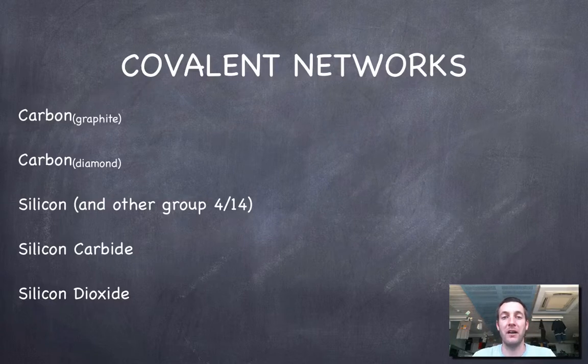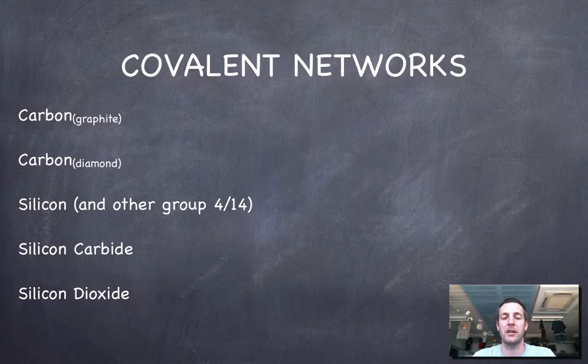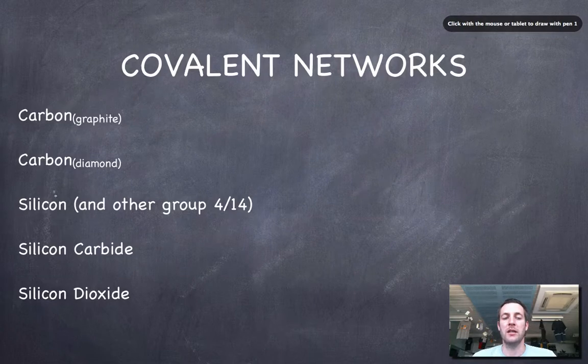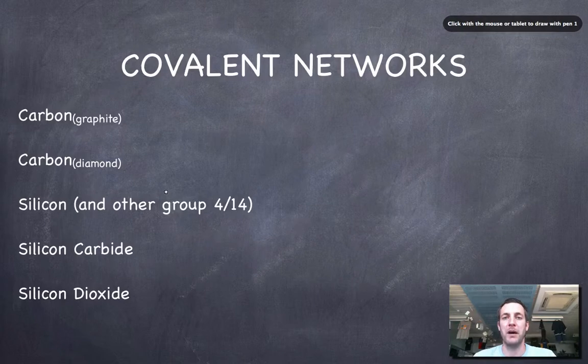Here are the five that you must remember. There's two allotropes of carbon - graphite and diamond. There's silicon as well - other group four or fourteen atoms do form networks but you're not expected to remember that.